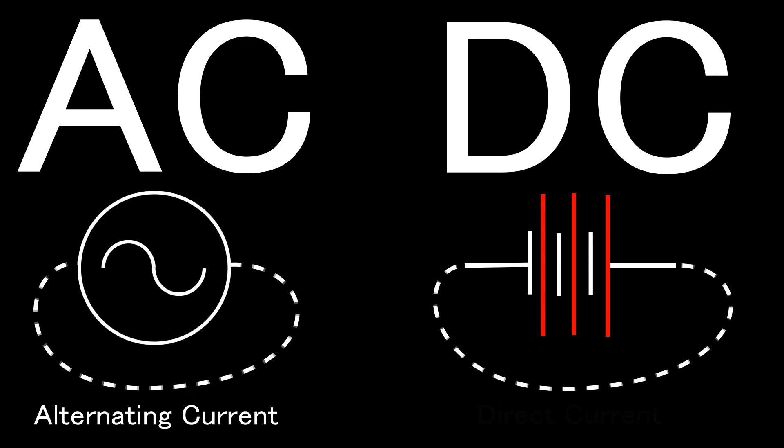DC, on the other hand, stands for direct current, and this is where electrons only flow in one direction, like the river example. DC current comes out of things like batteries.